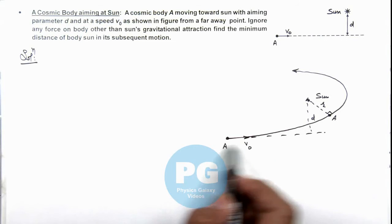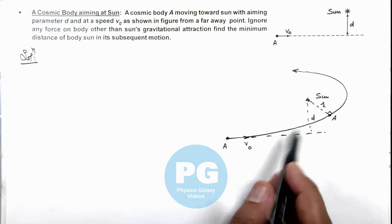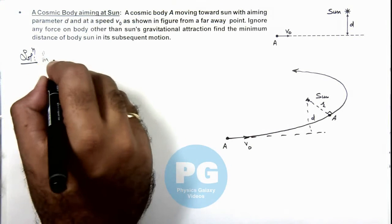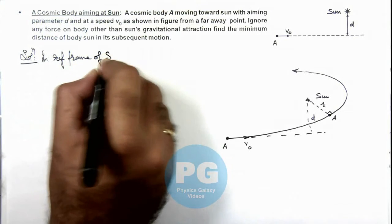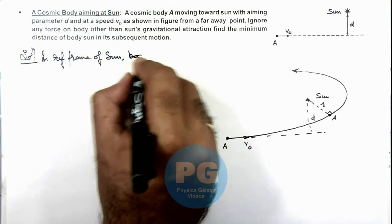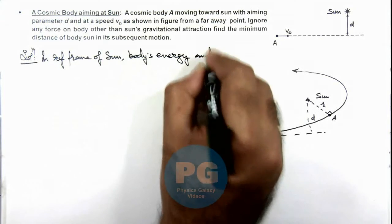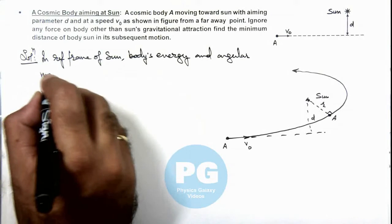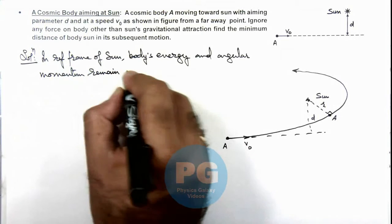Because all forces acting on body are only due to sun's gravitation, and that is passing through sun, we can say in reference frame of sun, that is in heliocentric reference frame, body's energy and angular momentum remain conserved.